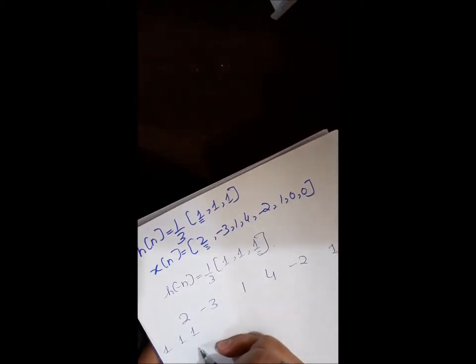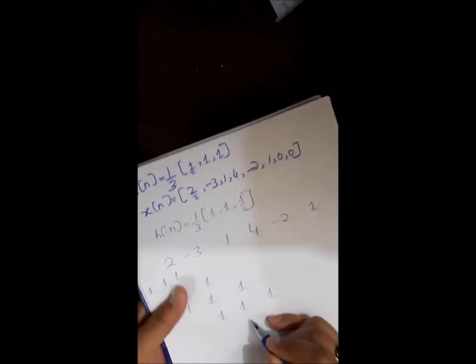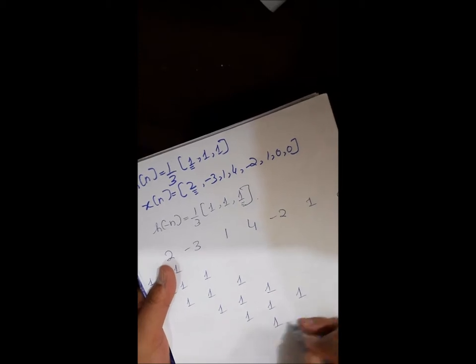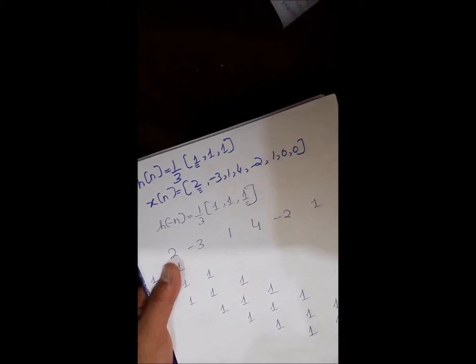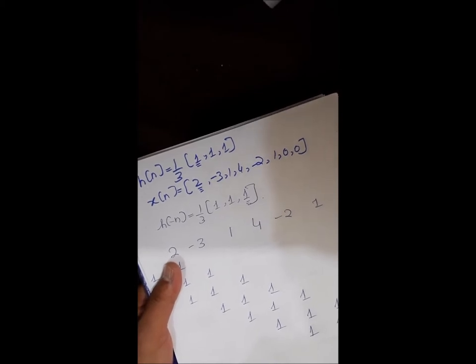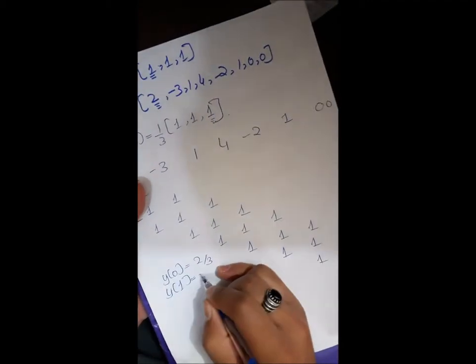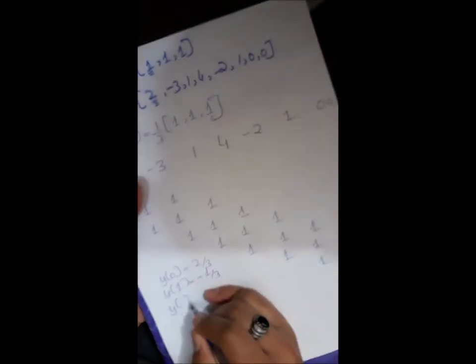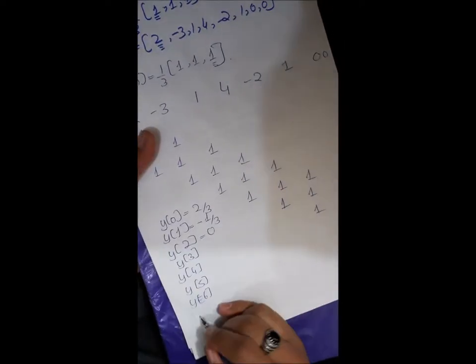So we will apply flip and slide method. This method is given like this. So after solving and flipping and sliding, the respective values are taken and y of 0 will be equal to 2 by 3, y of 1 will be minus 1 by 3, y of 2 will be 0, y of 3, y of 4, y of 5, y of 6, y of 7.